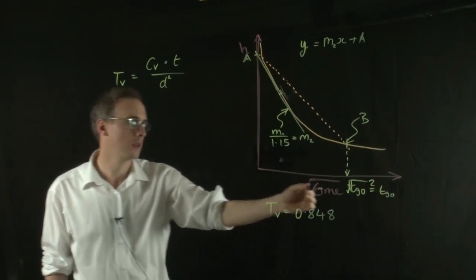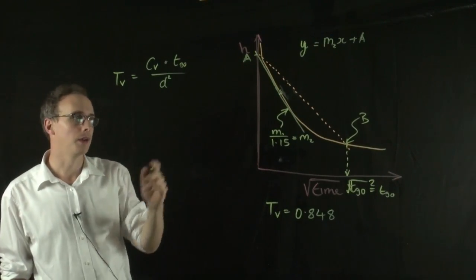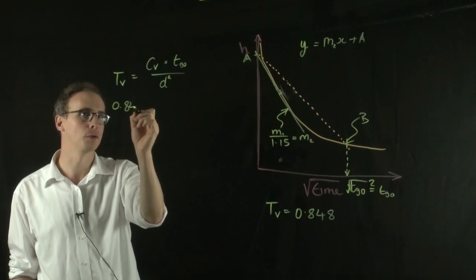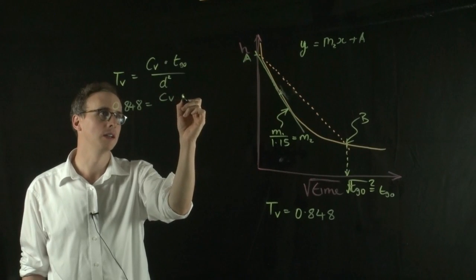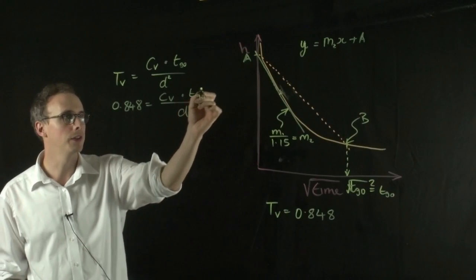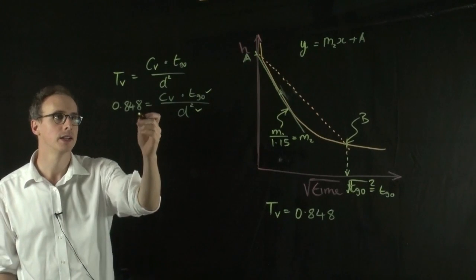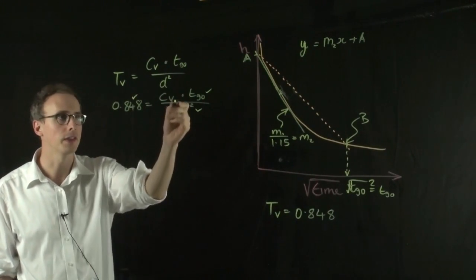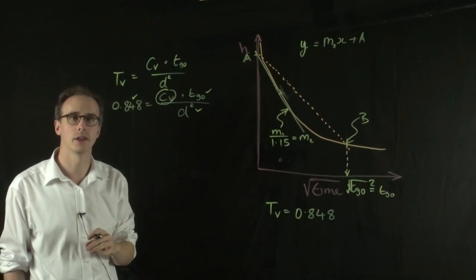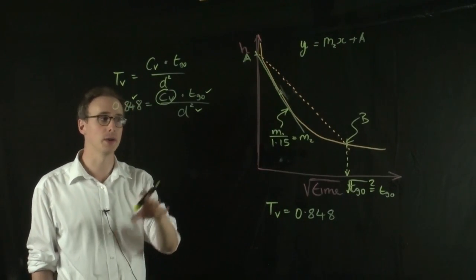The T value is this value here, T90. So I can use my T90 and I can use my Tv value here, which would be equal to 0.848. Tv equals Cv T90 over D squared. So I know the T90, I've just worked that out from my graph here. I know the D value from the odometer test, and I know the Tv value. So the only thing missing is my Cv value. So if I rearrange this equation to make Cv the subject, I should be able to work out what my Cv value is from this information.